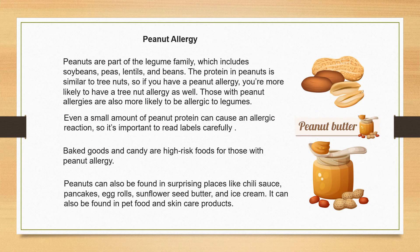Peanut allergy: peanuts are part of the legume family, which includes soybeans, peas, lentils, and beans. People who are allergic to peanuts are more likely to also be allergic to tree nuts and legumes. Read labels carefully. Peanuts can also be found in chili sauce, pancakes, egg rolls, sunflower seed butter, and ice cream. They can also be found in pet food and skin care products.